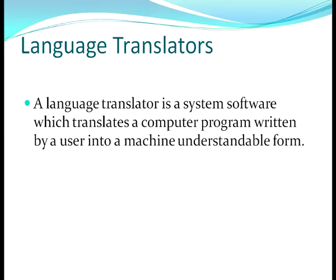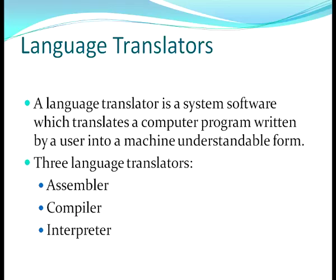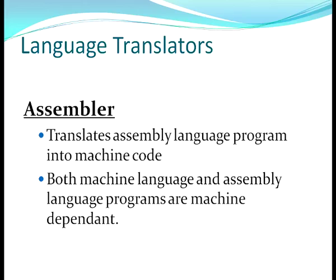Language translators convert programs written in any high level language into machine-understandable binary form. We have three language translators: assembler, compiler, and interpreter. An assembler converts the assembly language program into machine code. Both machine language and assembly language programs are machine dependent.